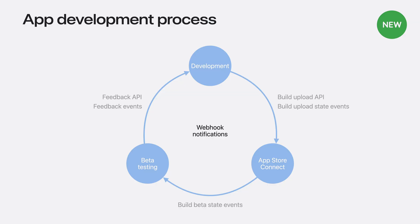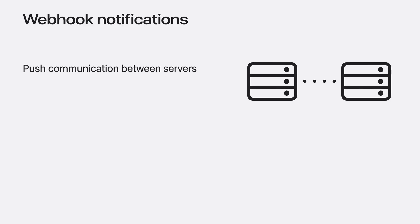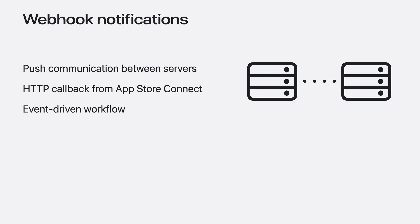Now let me explore these enhancements in more detail, beginning with Webhook notifications. Traditional APIs are like constantly calling someone to ask, 'Is there any news?' Your system has to keep asking App Store Connect for updates, but Webhooks flip that around. Webhooks are essentially push communication between servers. Instead of your system always asking, App Store Connect sends notifications about the events.